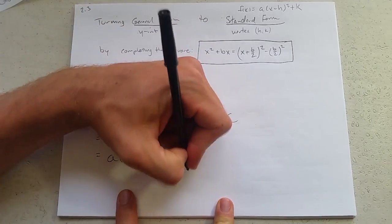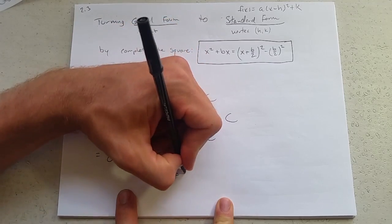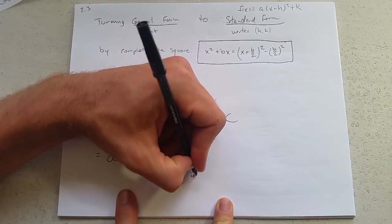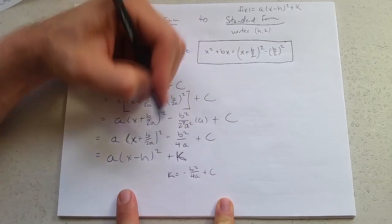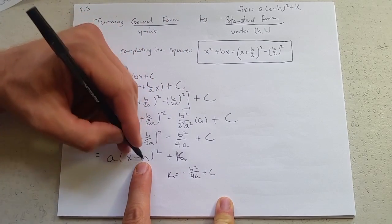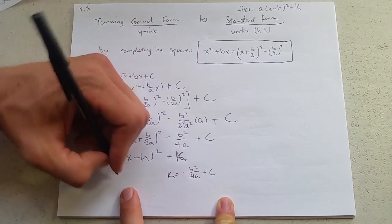So k equals negative b squared over 4a plus c. What is h? h is, now the signs are off. So h is negative b over 2a.